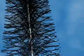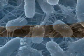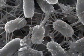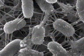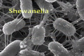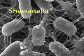The brush anode is made of carbon fibers bound by metallic wires. It has a large surface area for growth of an electrogenic biofilm and high conductivity at the core to collect the produced current.